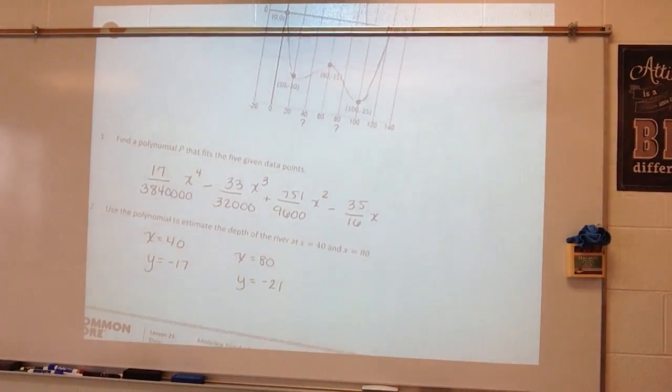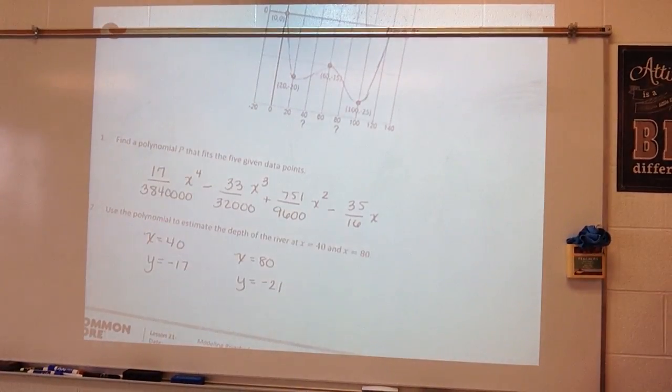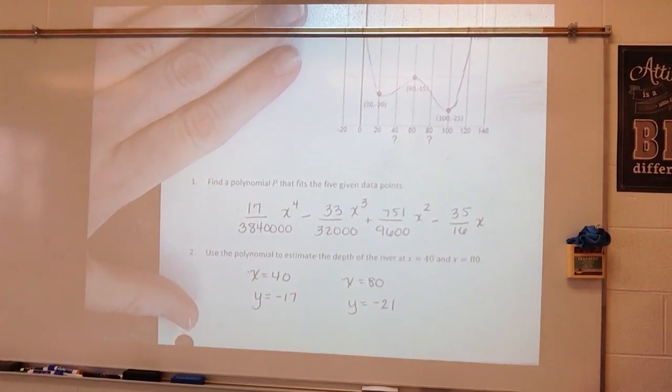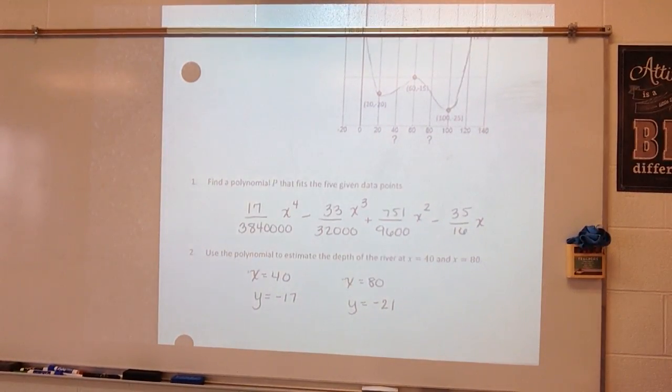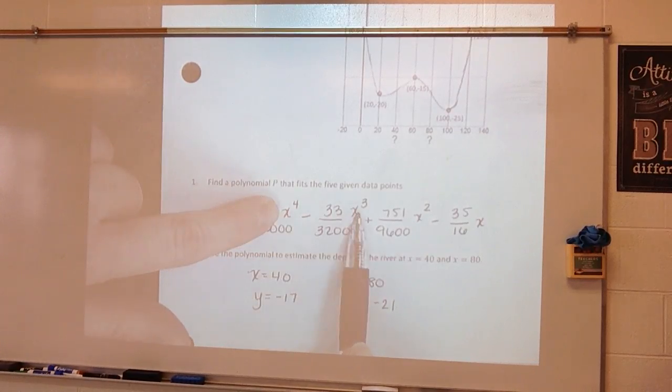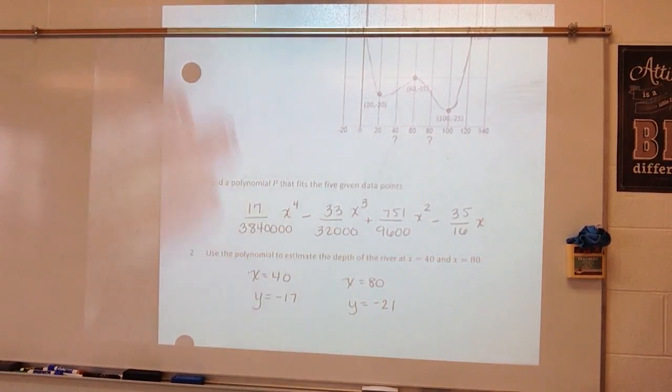Alright, so we answered these first two questions. We figured out our polynomial function. And if we didn't have the computer program to help us, then what we would have to do is we would have to plug in 40 for x every time and then figure all of that out.